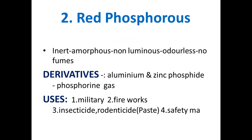Number two: red phosphorus, which is entirely different from white or yellow. It is inert, amorphous, non-luminous, and odorless, and gives no fumes — entirely opposite to white phosphorus. There are also certain derivatives or compounds of phosphorus used as poison, such as aluminum phosphide and zinc phosphide.